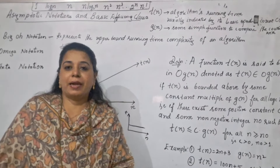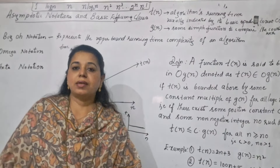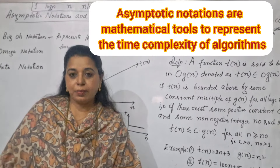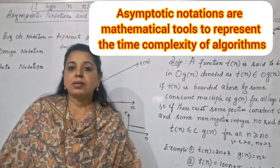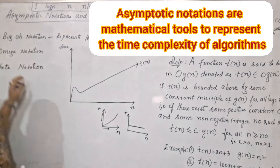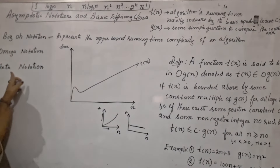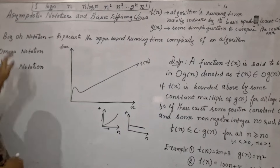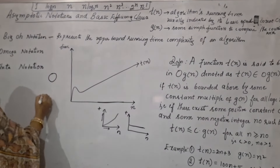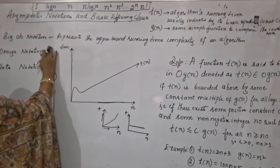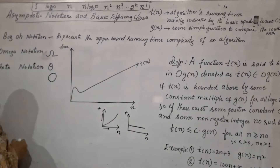So how do we express this kind of behavior? We have certain notations and we call those notations asymptotic notations. Basically there are three types: Big O notation, Big Omega notation, and Big Theta notation. Big O notation uses the uppercase O symbol, Omega notation uses the omega symbol, and for Theta notation you use the theta symbol.